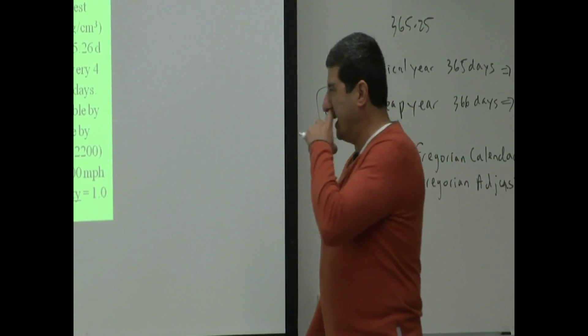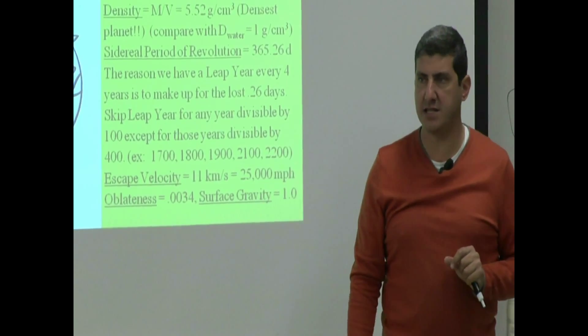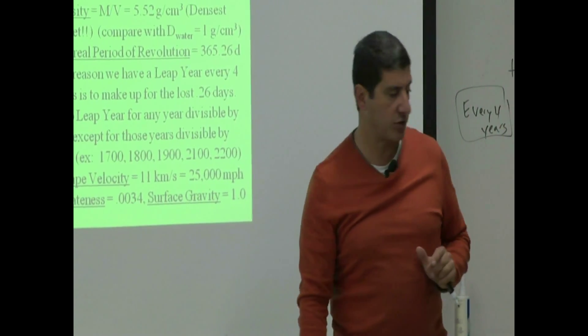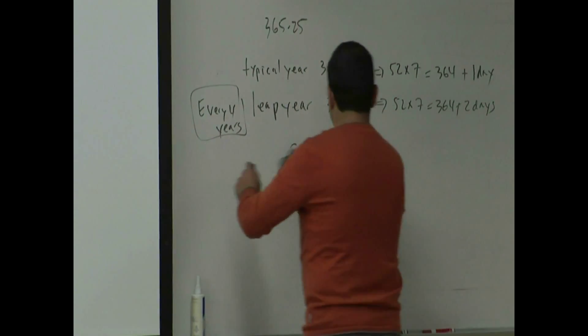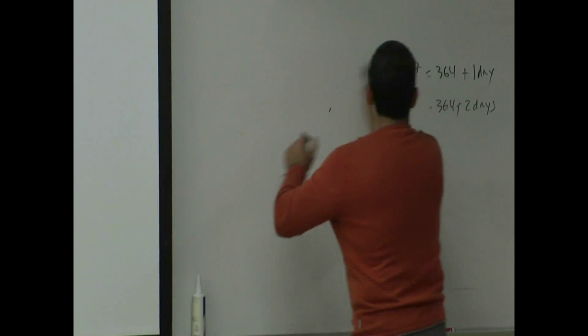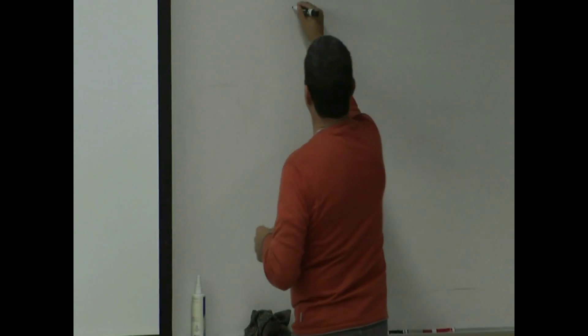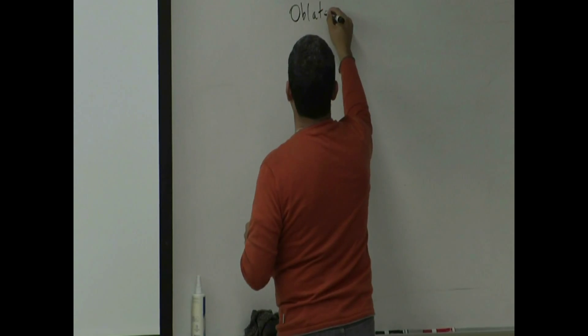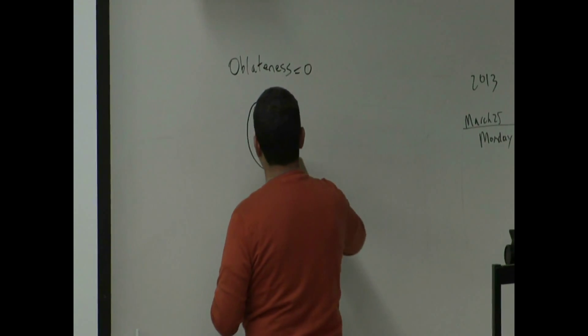Oblateness is a measure of how spherical a planet is or a moon is. If the oblateness is zero, then the planet is perfectly spherical. Oblateness, zero means a perfect sphere.